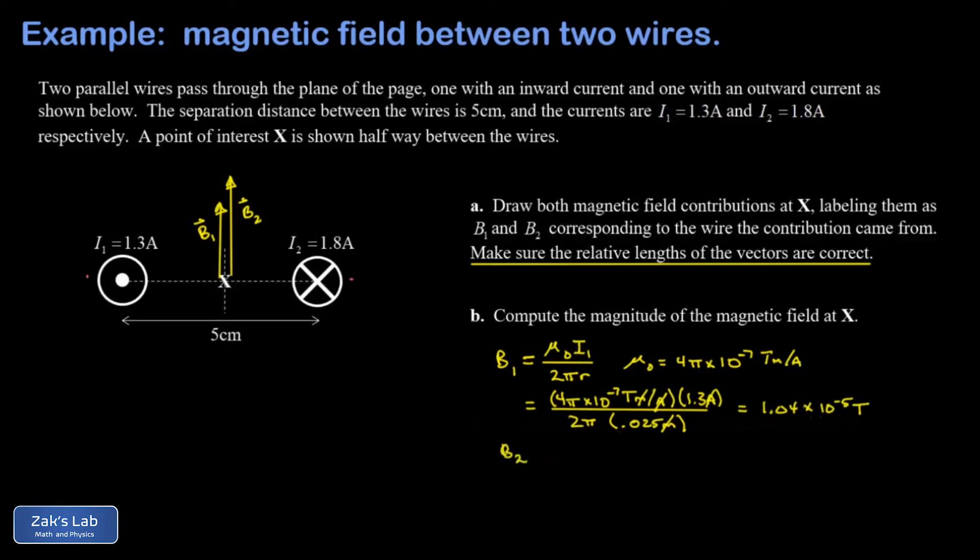We do the same thing for the contribution from the wire on the right. We plug in the numbers, and this gives me 1.44 times 10 to the negative 5th. We're just adding these two vector magnitudes together because they point in exactly the same direction. We get a total magnetic field magnitude of 2.48 times 10 to the negative 5th tesla, and we're done.